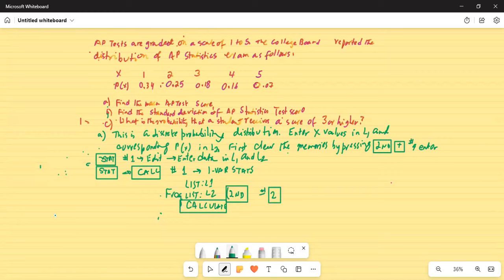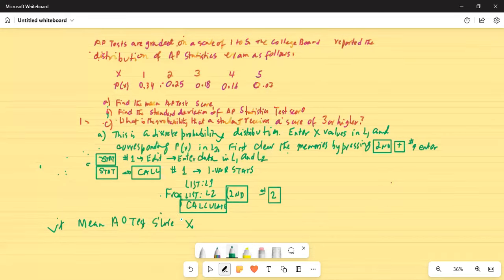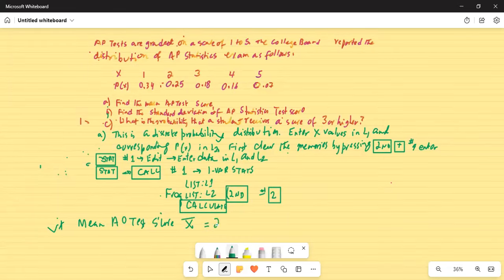So your mean score, part one, find the mean AP test score. So the mean AP test score, X bar is equal to 2.37. So that is your part A.